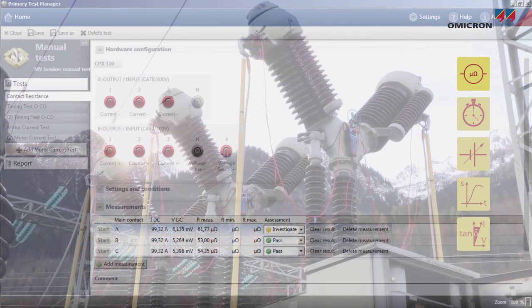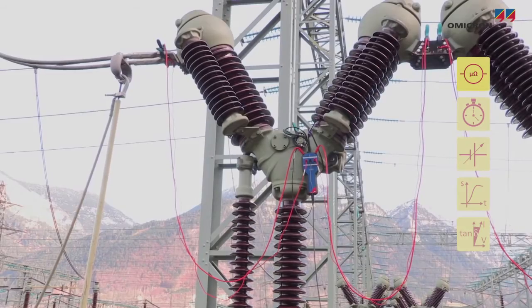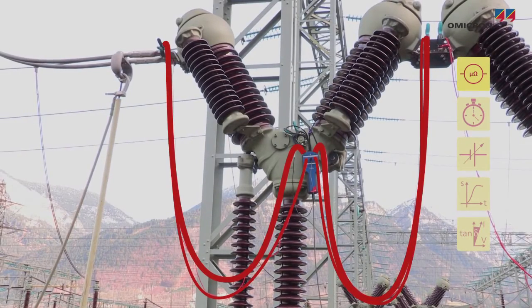The first test usually performed in a circuit breaker is the static contact resistance in the closed position. The static contact resistance is determined by injecting a high DC current while the voltage is measured via a separate set of cables.